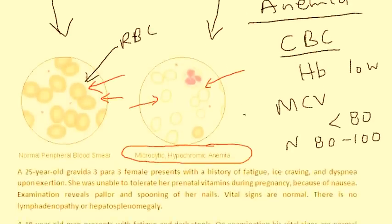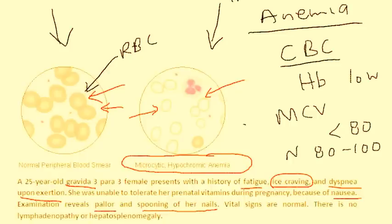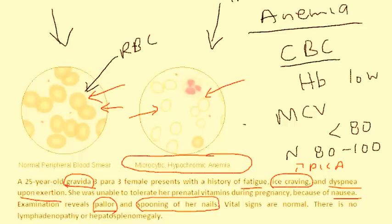First vignette: a 25-year-old gravida 3, para 3 female presents with fatigue, ice craving, and dyspnea upon exertion. She was unable to tolerate her prenatal vitamins during pregnancy because of nausea. Examination reveals pallor and spooning of her nails. Vital signs are normal; no lymphadenopathy or hepatosplenomegaly. The ice craving is pica, and pregnant women can have increased iron requirements — her physical exam findings are very consistent with iron deficiency anemia.